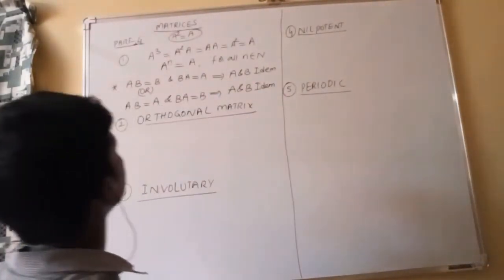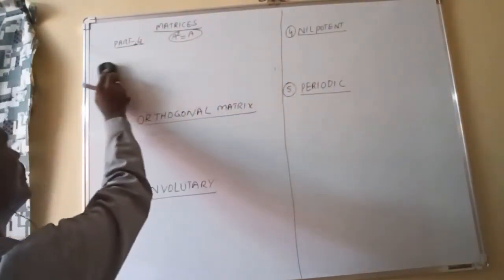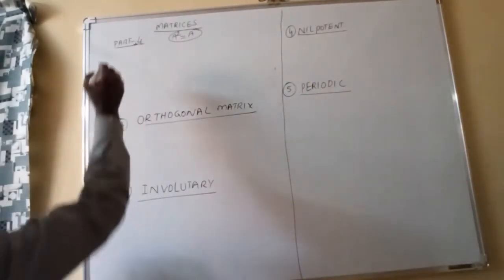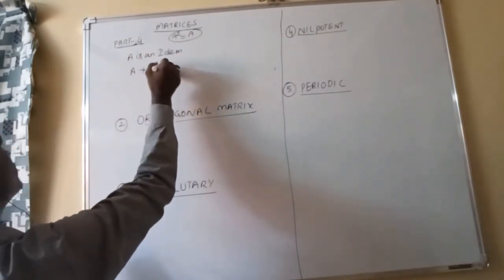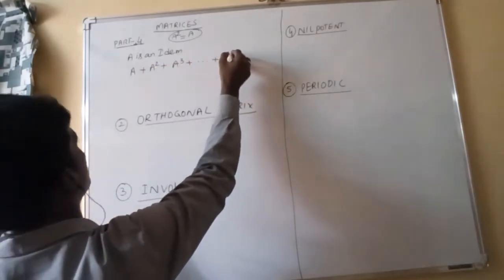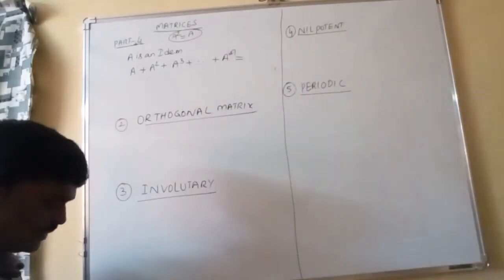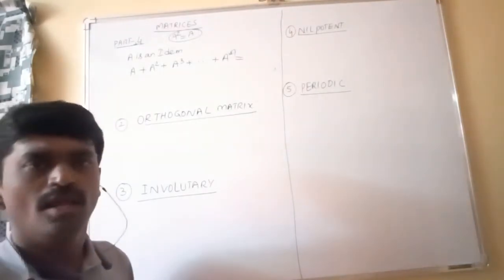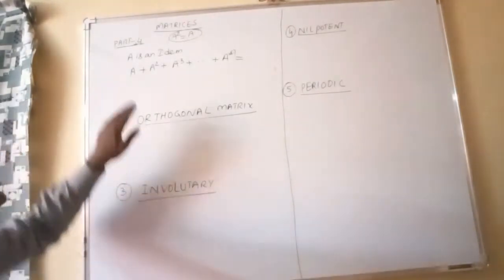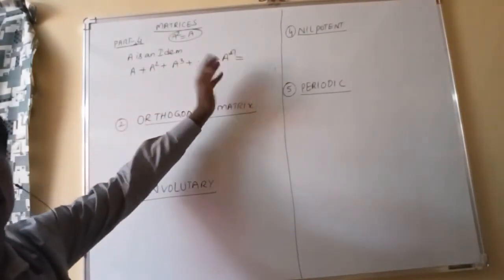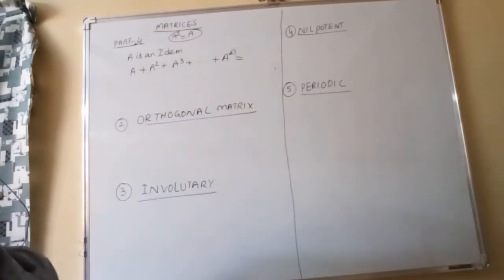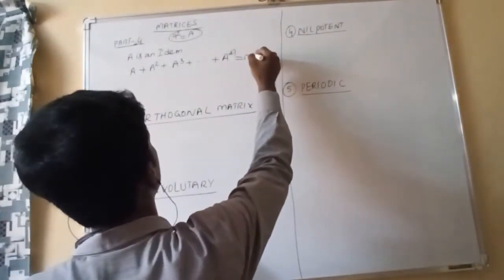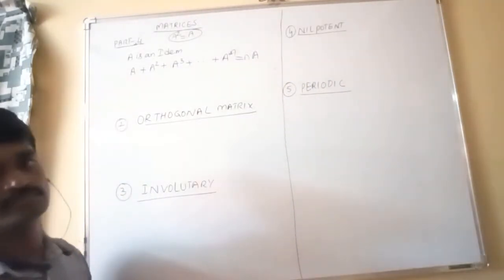Example on idempotent matrix: If A is idempotent, what is A + A² + A³ + ... + A^N? Since A is idempotent, A² = A, A³ = A, and A^N = A for all natural N. There are N terms, each equal to A, so the sum equals N times A.